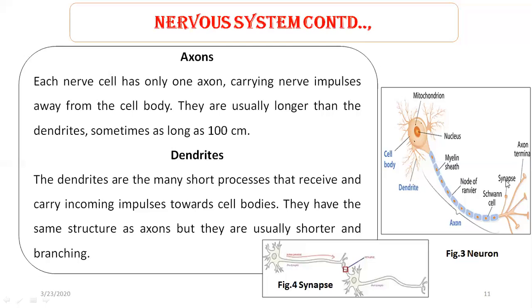Synapse is a junction between two nerve cells which helps to transfer electrical activity from one cell to another. As you can see in figure 4, it is a junction between two nerve cells — this is one nerve cell, this is another nerve cell, and this junction is called the synapse. The figure also shows the axon terminals, dendrites, cell body, and mitochondria.